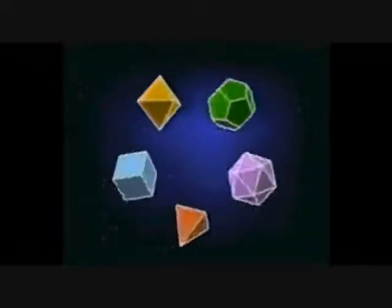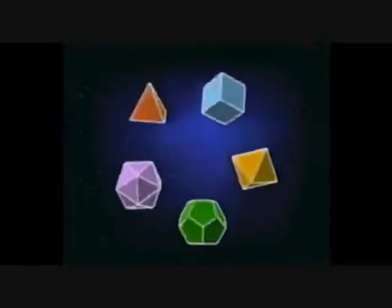These are the Platonic solids, named after the ancient Greek philosopher Plato. The Platonic solids are a very special type of polyhedron. A polyhedron is a solid constructed by joining polygons along their edges to enclose a region of space. The polygons then become the faces of the polyhedron. When all of the edges of a polygon have the same length and all of the angles are the same, the polygon is regular. The Platonic solids are constructed from such regular polygons.